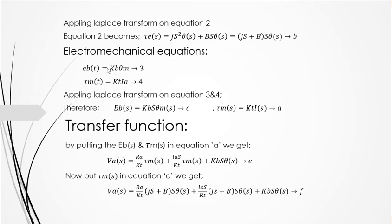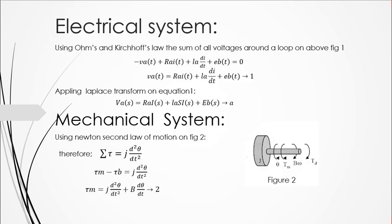Similarly, if the angular velocity θ dot increases, the back-EMF voltage Eb also increases. Taking the Laplace transform of these two equations: Eb(s) equals Kb·s·Θ(s). Now to get the transfer function, we substitute Eb(s) and Tm(s) into equation A, which is our electrical KVL Laplace equation.